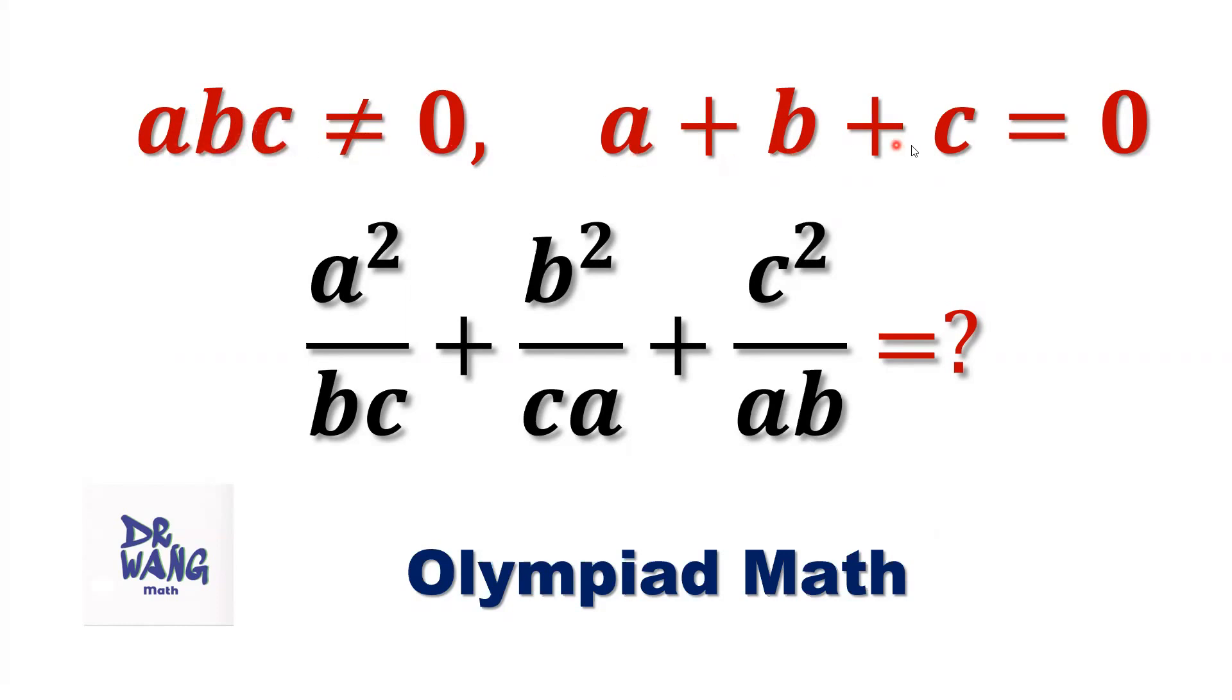A plus B plus C equals zero. We want to find the value of A squared over BC plus B squared over CA plus C squared over AB.